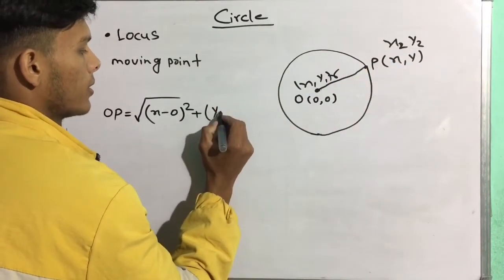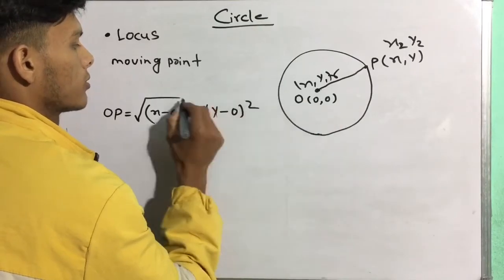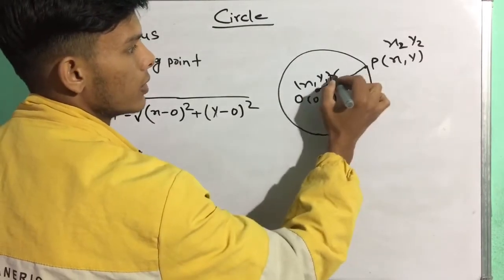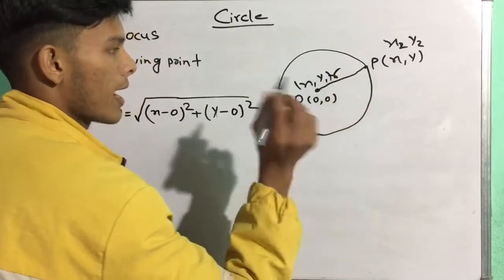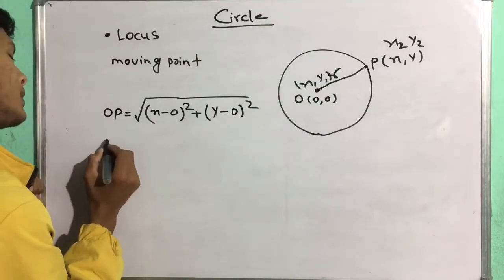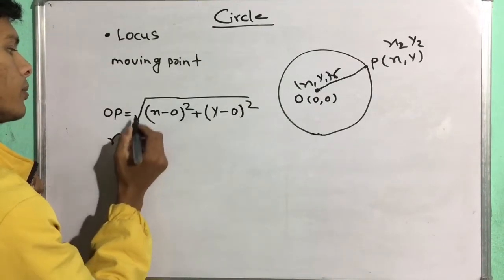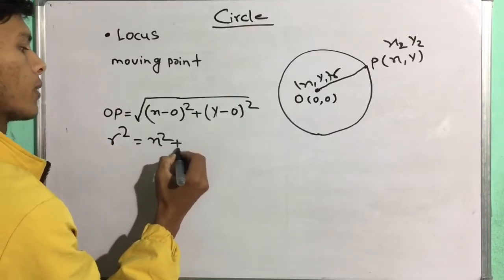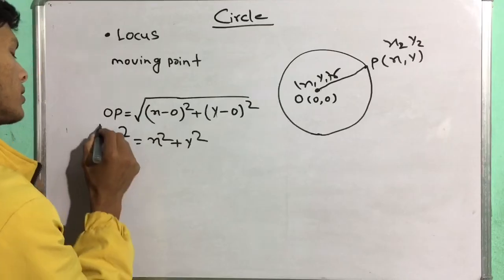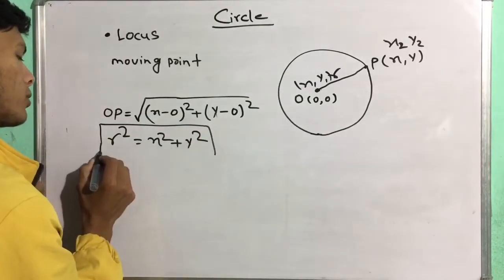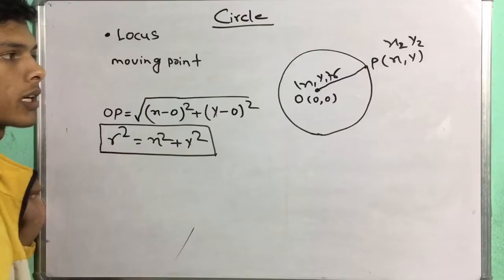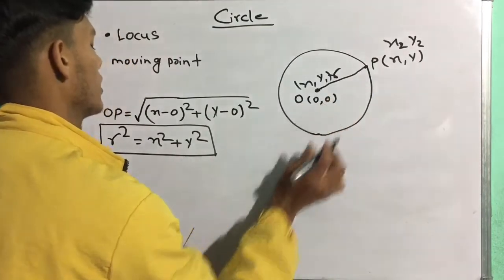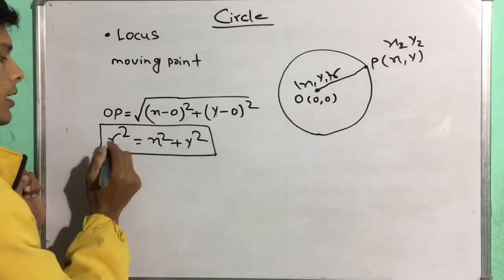So this means OP is equal to r. Now the root gives r squared, and this is x squared plus y squared. So this is the circle. If we take the circle, the center of the circle — we take the circle.